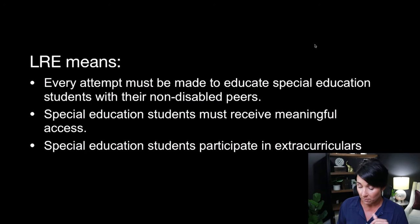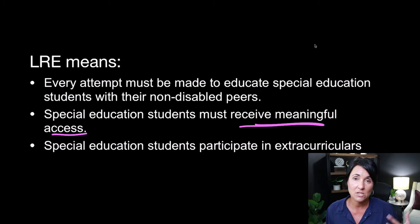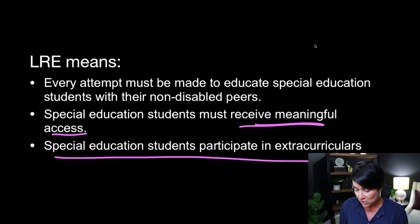Special education students must also receive meaningful access. We need ramps and access to PE equipment, allowing students to safely engage in physical education and other activities. If a student is bound to a wheelchair, you're not going to give her a 50-pound weight to lift during weightlifting class, but there are other things we can do with that student to allow her to be part of the PE class. Special education students must also be able to participate in extracurricular activities — sports, drama, art, all of that. LRE means access. We should be giving these students all the same access that general education students receive, but they might have a paraprofessional with them to assist — and that's okay. Access is key.